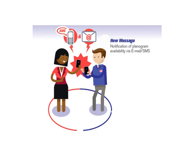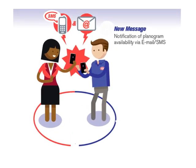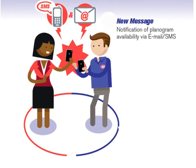An SMS and email notification is then sent to the dealer and CMA or area manager advising the newly created planogram availability. To access planograms for the site, dealers are able to log into DealerZone and navigate to the planogram system by completing the following steps.